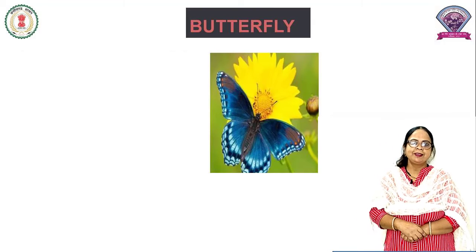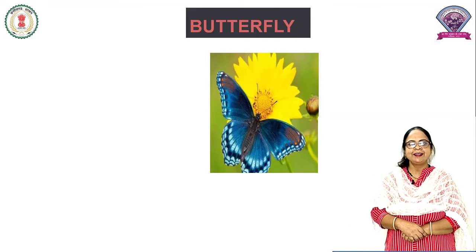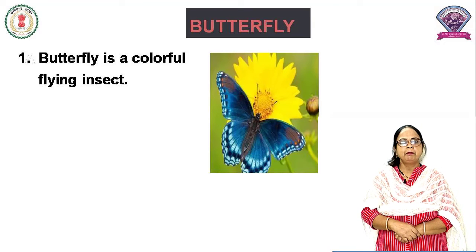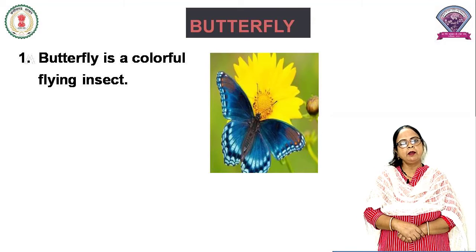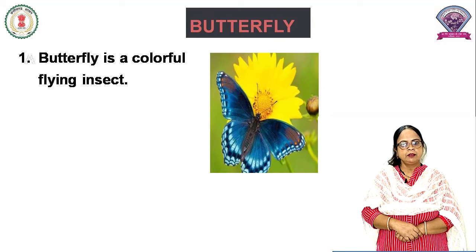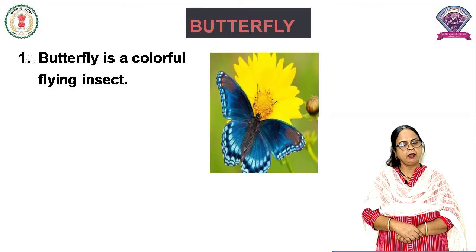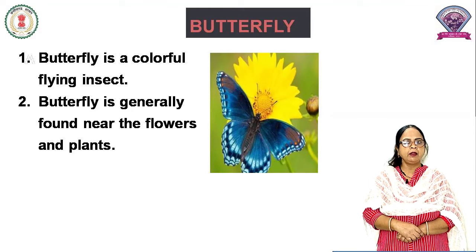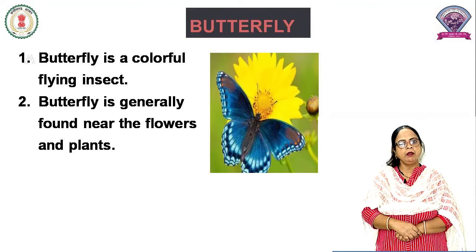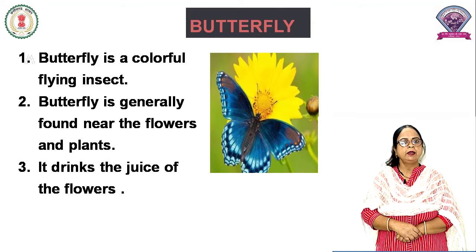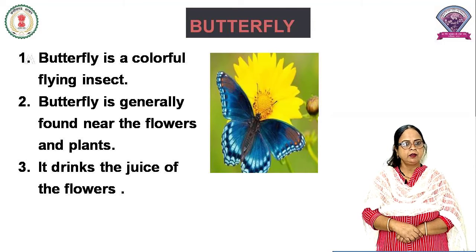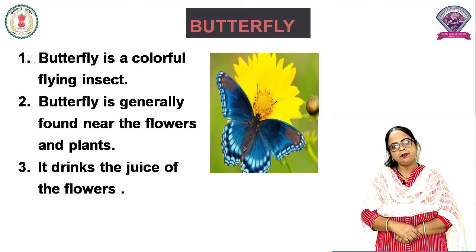Next is Butterfly. Saare bacchon ko titli bahut pasand hoti hai — rang birangi titli. Butterfly is a colorful flying insect. Butterfly is generally found near the flowers and plants. Titli ko aapne phoolon aur paudhon par dekha hoga. It drinks the juice of the flowers. Yeh phoolon ka ras peeti hai.